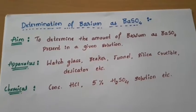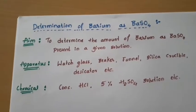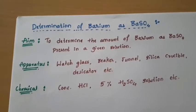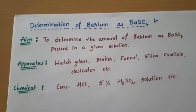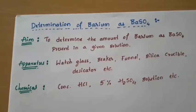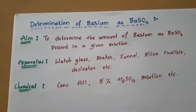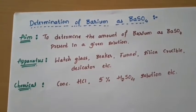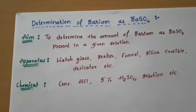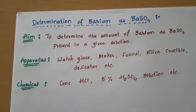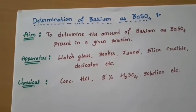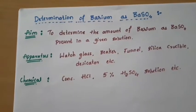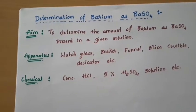This gravimetric analysis involves the following steps — seven main points. First is preparation of the solution; next, separation of the substance; next, digestion or heating; next, filtration and washing the precipitate; next, drying and ignition of the precipitate; next, weighing the dried or ignited precipitate; and finally, calculation of the constituents.